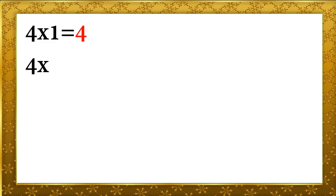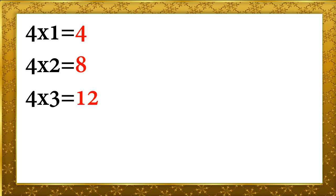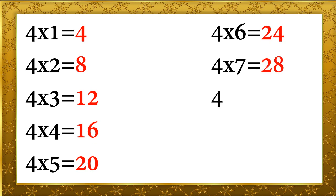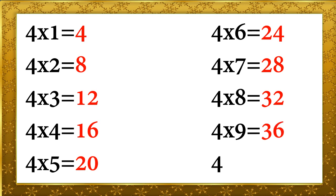4 tens are 40, 4 ones are 4, 4 twos are 8, 4 threes are 12, 4 fours are 16, 4 fives are 20, 4 sixes are 24, 4 sevens are 28, 4 eights are 32, 4 nines are 36, 4 tens are 40.